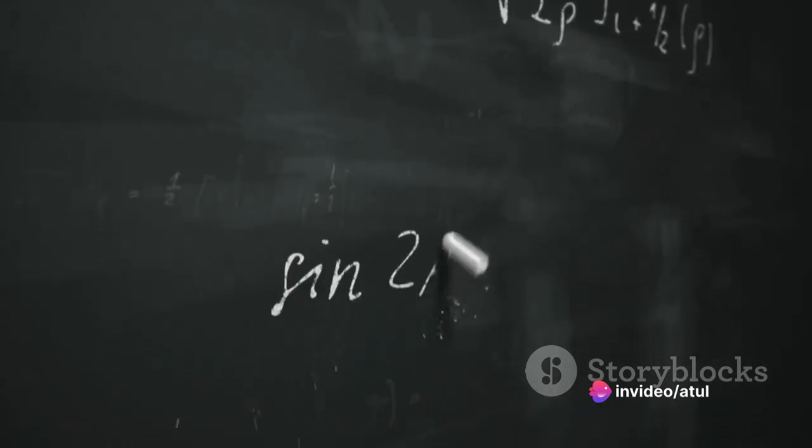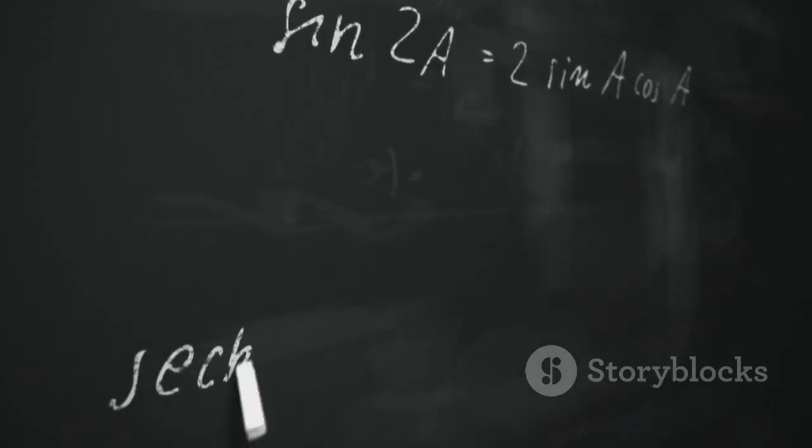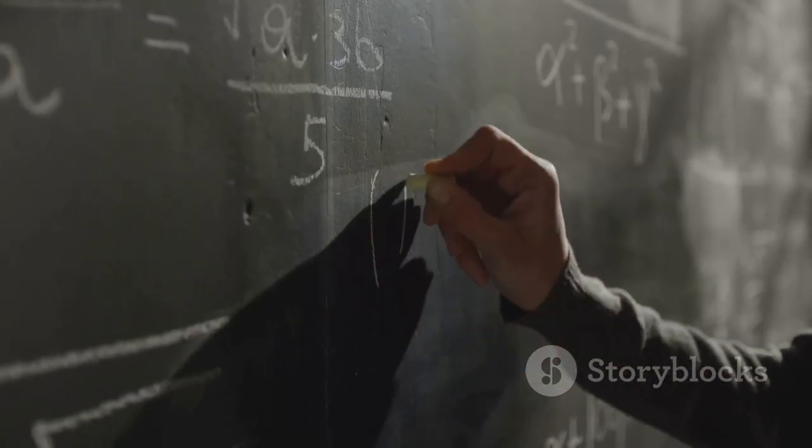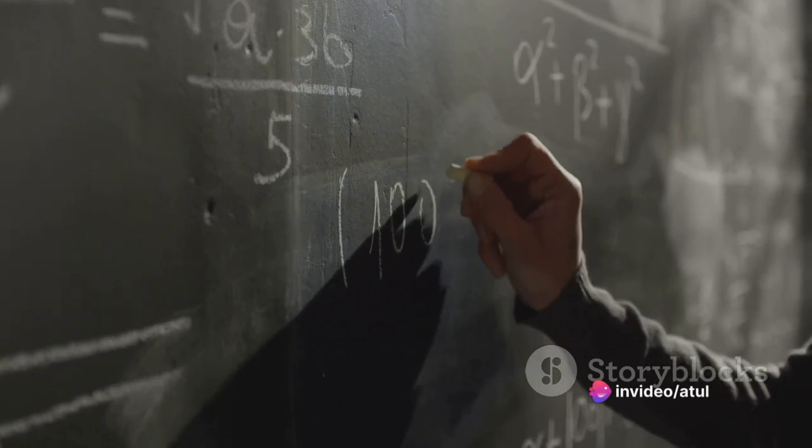Where y is the dependent variable we want to predict, x is the independent variable we're using to make the prediction, m is the slope of the line, and c is the y-intercept.